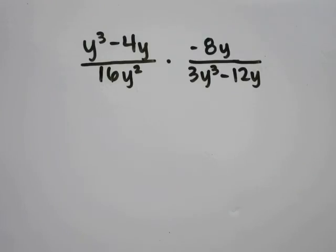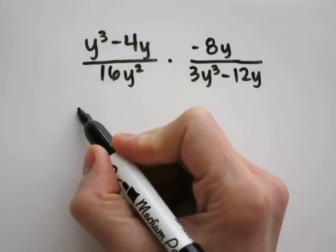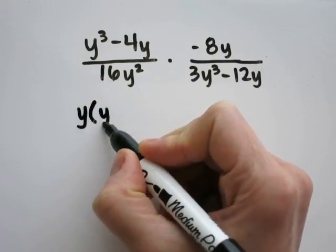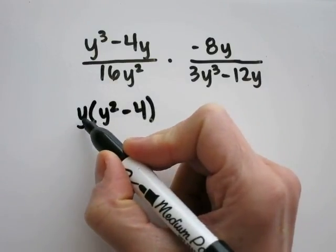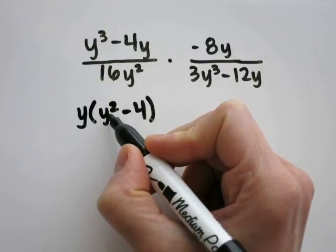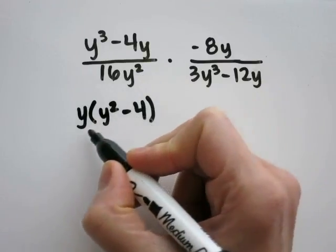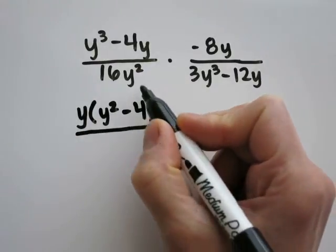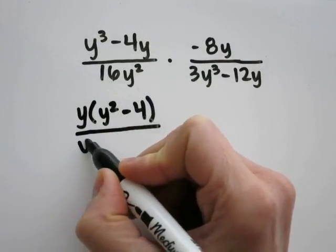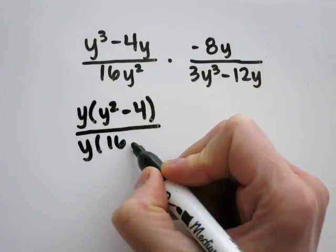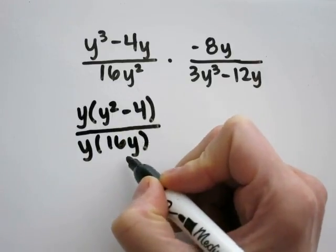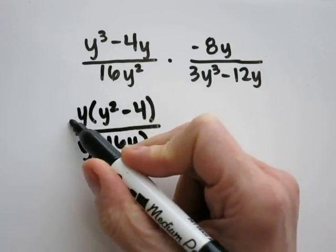Problem 16: y cubed minus 4y over 16y squared times negative 8y over 3y cubed minus 12y. I'm going to start over here and factor out a y. y cubed would become y squared, and 4y would just become 4. Distribute to double-check: y times y squared is y cubed, y times 4 is 4y. In the denominator I have y squared, so I factor out a y to get y times 16y, then cancel those y's out.